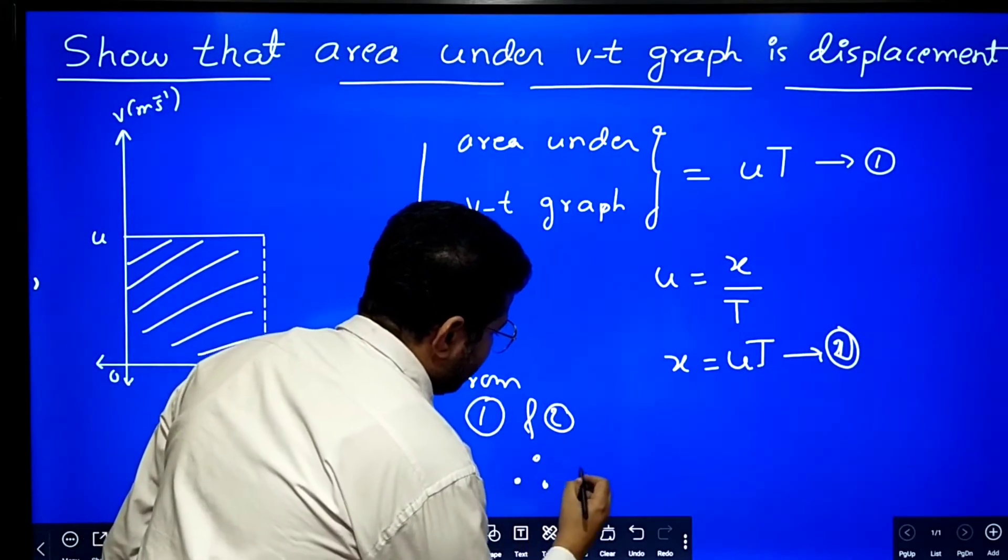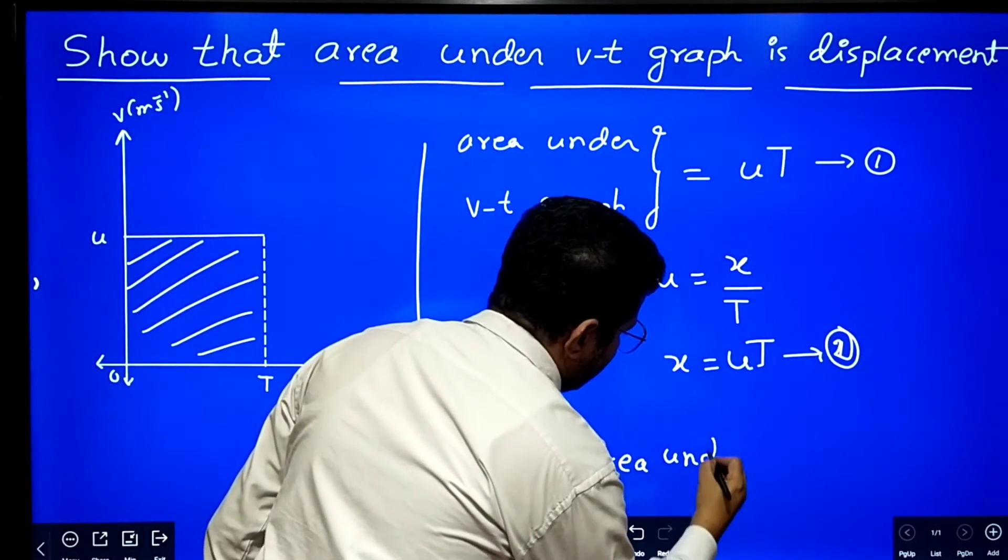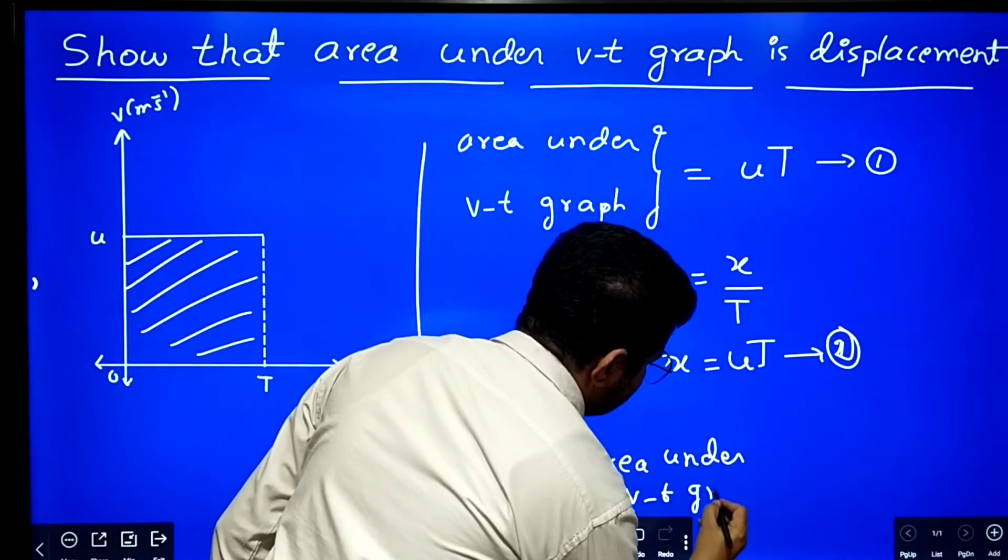Therefore we can write that area under vt graph gives displacement.